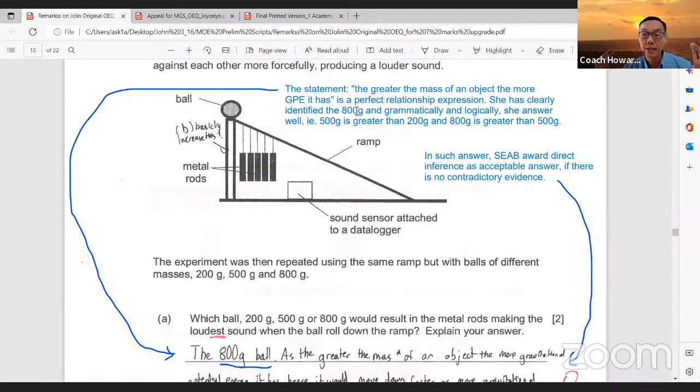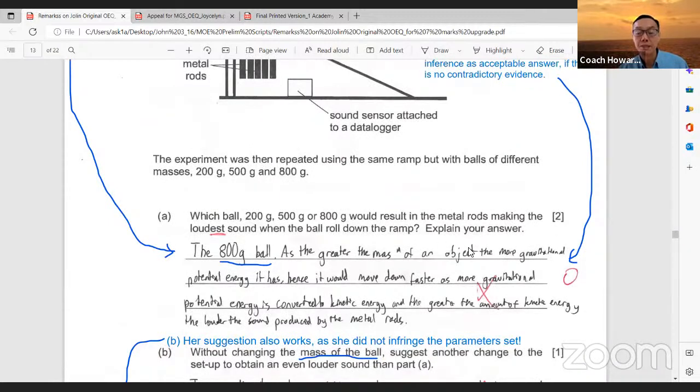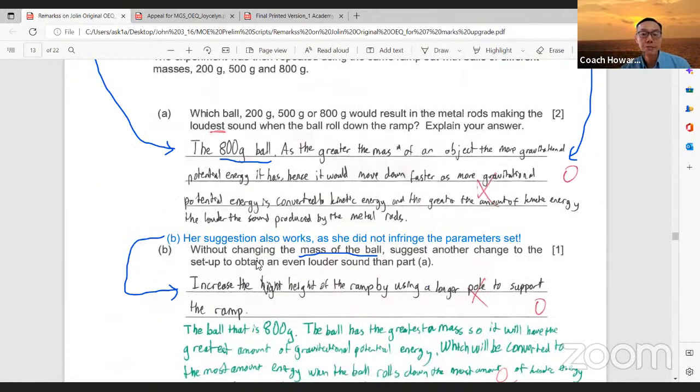In such answer, SEAB I believe will award this direct inference as acceptable answer because there's no contradictory evidence that proves otherwise. Therefore, I appeal to the school examiner to reconsider marking this. For this next question, part B, the parameter set is without changing the mass of the ball, suggest another change to the setup to obtain an even louder sound than part A.